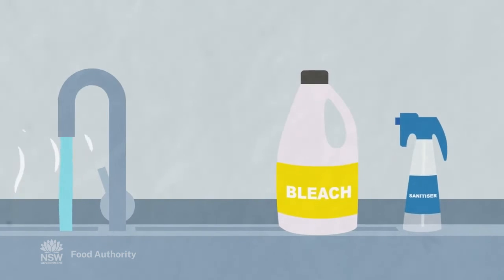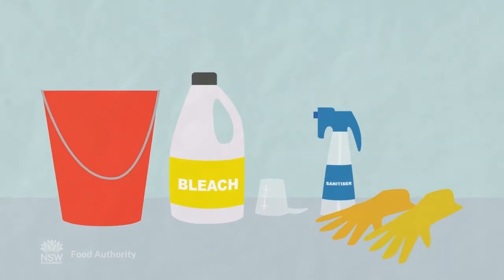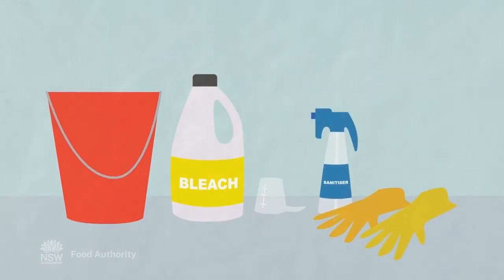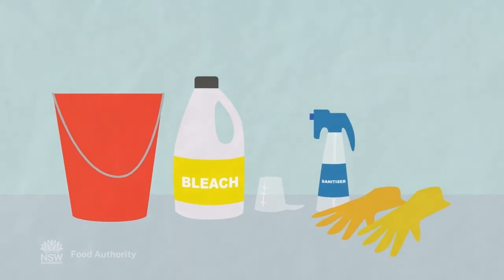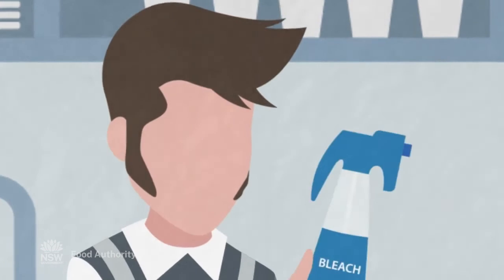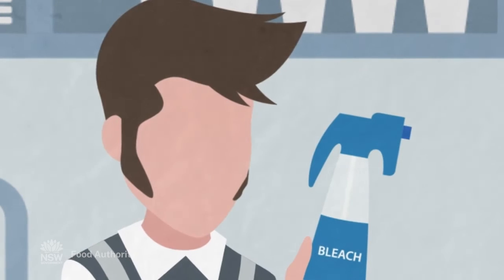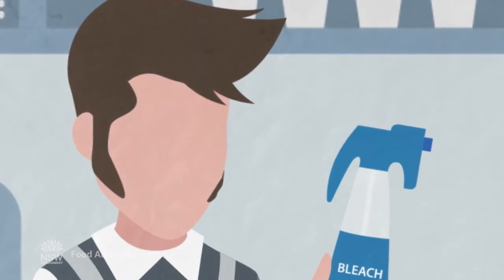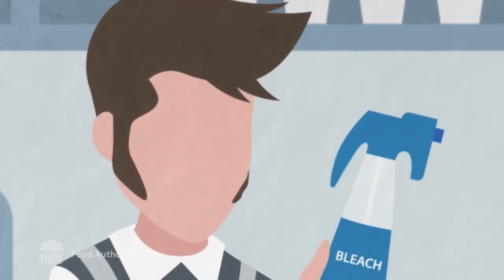You can sanitise using hot water, a dishwasher on the longest hottest cycle, or a chemical solution like bleach or a food grade sanitiser. Always use the correct amount and follow the instructions on how to prepare the solution, as this may vary between products as well as using hot or cold water.